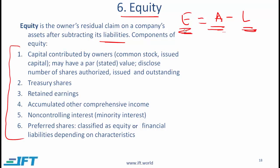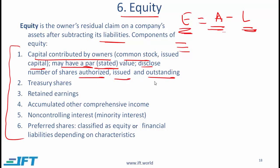With equity we need to understand the different categories, and those categories — at least the major ones — are shown over here. Contributed capital is the money that has actually been contributed by the owners either at the start of the company or during the life of the company. This is called common stock or issued capital. It may have a par value or stated value. A company needs to disclose the number of shares which are authorized, issued, and outstanding.